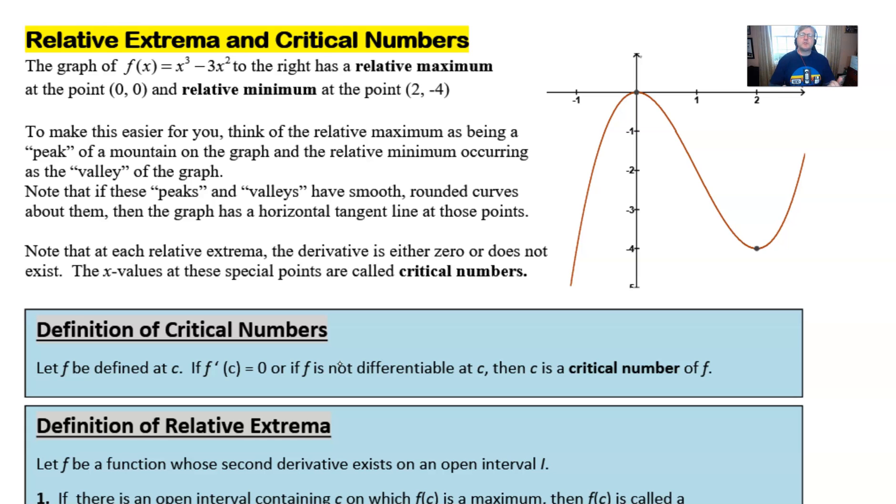Sometimes we'll call it a critical number, critical point, critical value. They all mean the same thing and it's that value of c, that x value, that would make either of these two things a true statement.